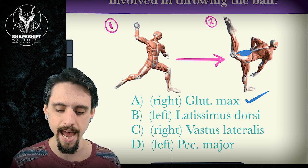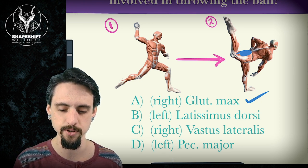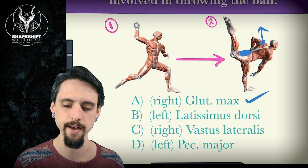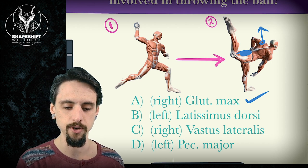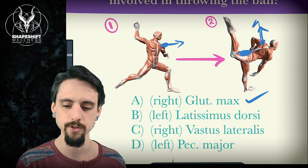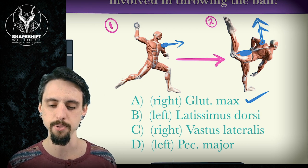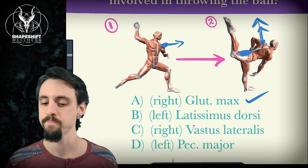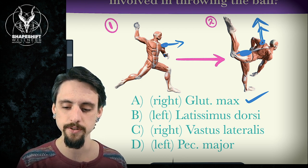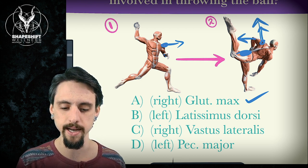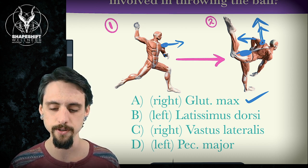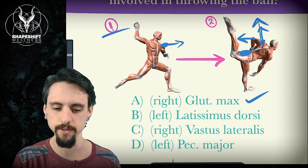What about the lats, the left side latissimus dorsi? Well, the lats can rotate the shoulder to the left. And here we see that the shoulder is forward. It starts forward, but then it rotates to the left as the person pitches the ball. So I'm going to say, yeah, the lats are involved and also the arm moves into extension and internal rotation. So I'm going to say, yeah, definitely the lats worked from point one to point two.